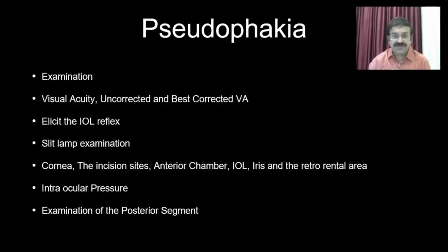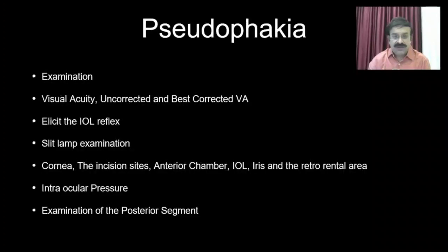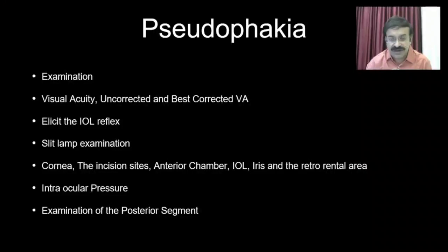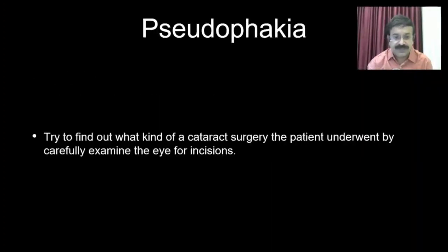For examination, you will obviously do the general examination first, then come to the systemic or visual system examination. This begins with visual acuity — both corrected and uncorrected visual acuity must be mentioned. Then try to elicit an IOL reflex. Do a slit lamp examination, paying attention to the incision sites, the anterior chamber, the intraocular lens within the iris, the iris itself, and the retrolental area. Intraocular pressure must be mentioned, and examination of the posterior segment also has to be mentioned — even if you are not doing it, ask the examination coordinator whether it is normal or has any finding.